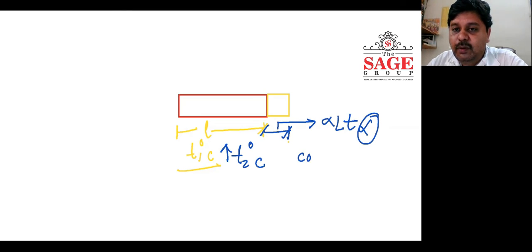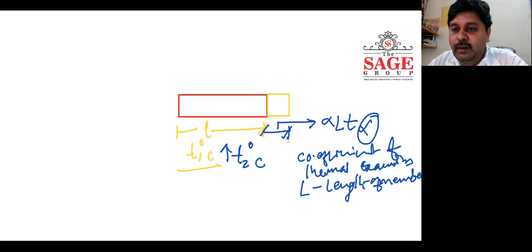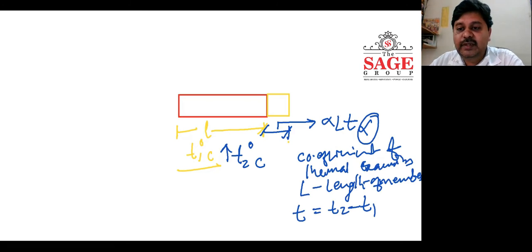Alpha is the coefficient of thermal expansion or contraction, L is the length of the member, and T is the change in temperature, that is T2 minus T1.